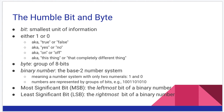A byte — spelled with a 'y' — is a group of eight bits together. Why eight bits? Eight bits turns out to be the smallest really useful grouping. Some people in the past used the nibble, which was four bits, but it doesn't get us a whole lot. So we usually group things into bytes at the very least, because it gives us some useful representations of things.